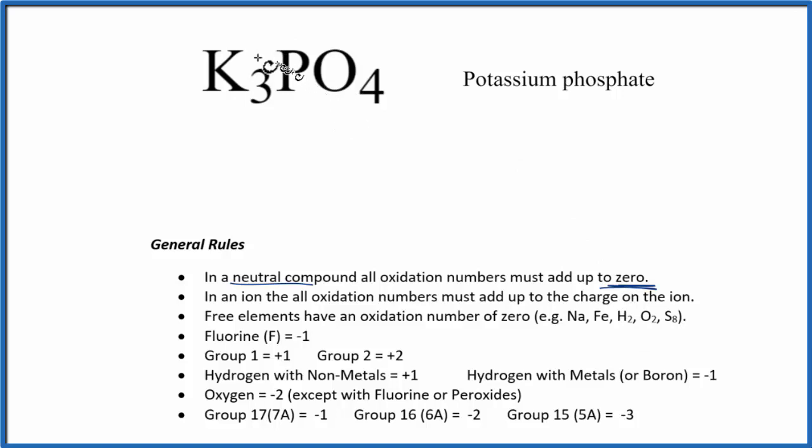Next, let's look at each element here. Potassium is in group 1, and elements in group 1 have a plus 1 oxidation number. So each one of these potassiums has an oxidation number of plus 1. We don't know the oxidation number for phosphorus. We're going to have to determine that. Oxygen is always minus 2, with a few exceptions. So this is minus 2.